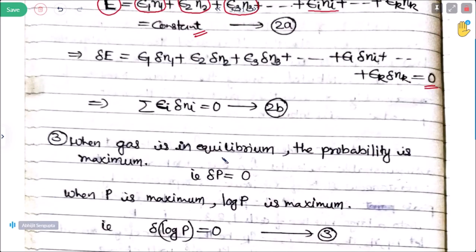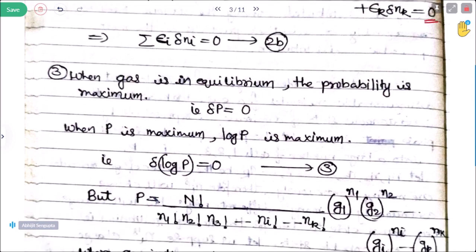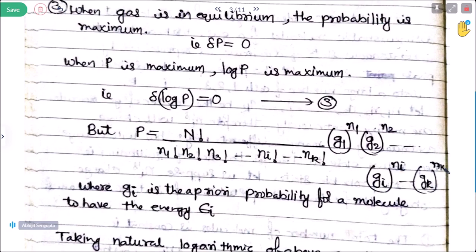Postulate 3 — when the gas is in equilibrium, the probability of finding the molecule at a given point is maximum. We know from mathematical physics that delta P equals zero when P is maximum, and when P is maximum, log P is also maximum. From probability theory, P equals N factorial divided by n1 factorial, n2 factorial, n3 factorial up to nk factorial, multiplied by g1 to the power n1, g2 to the power n2, up to gk to the power nk, where gi is the prior probability of the molecule having energy epsilon_i.